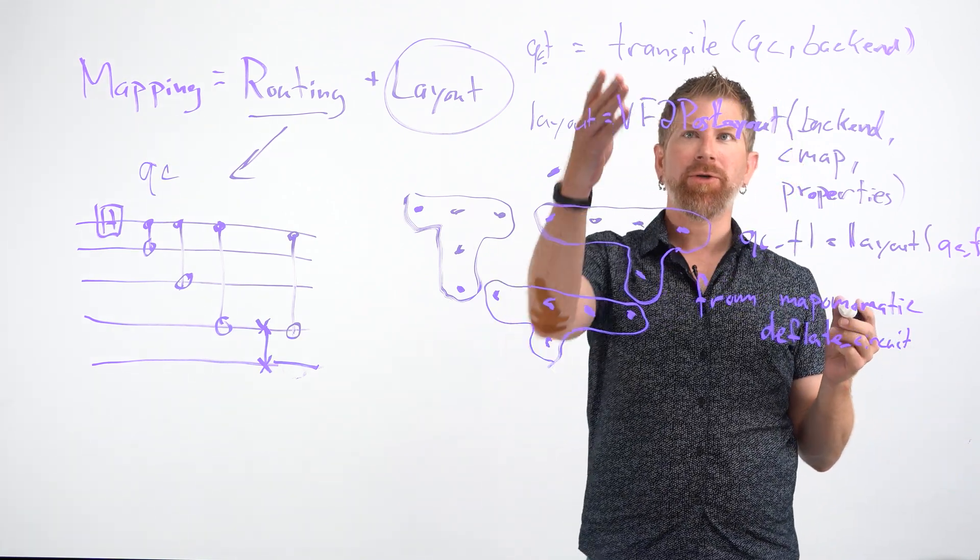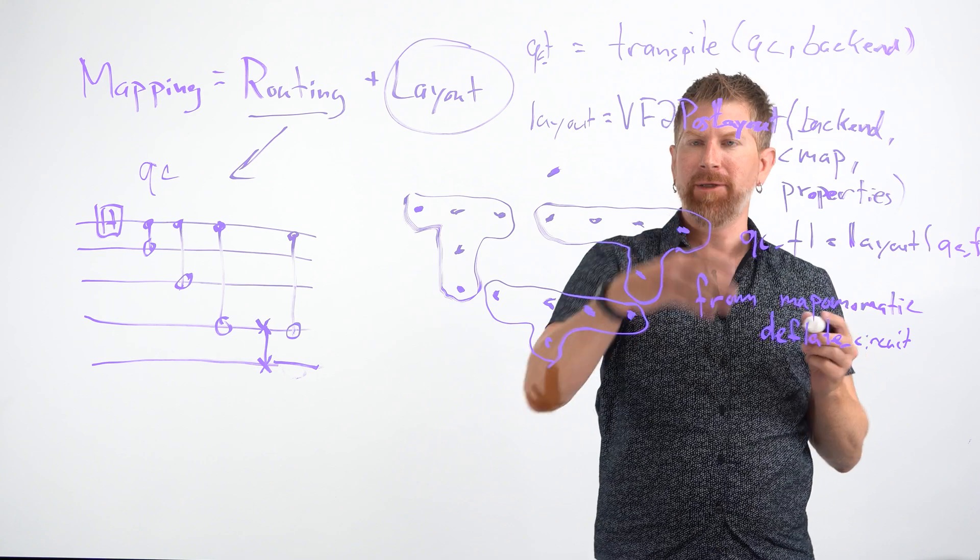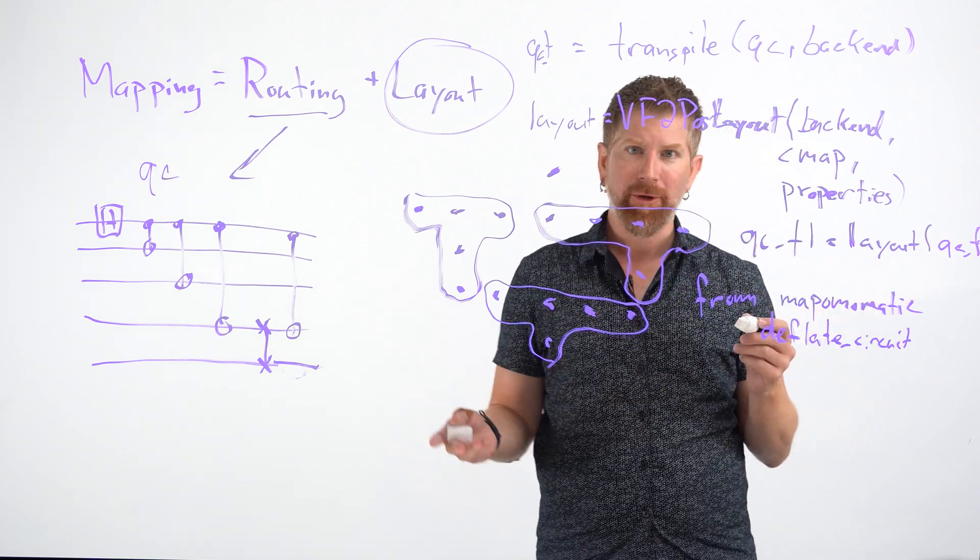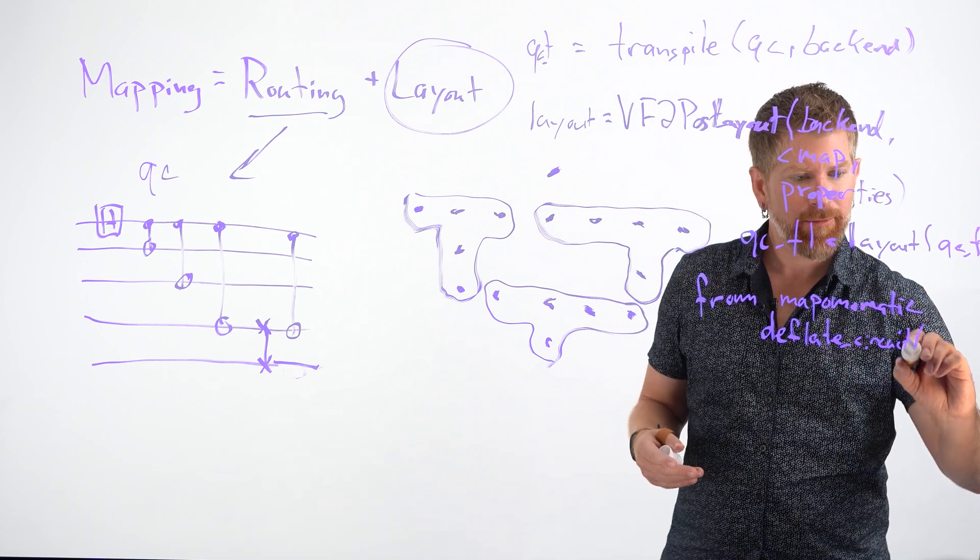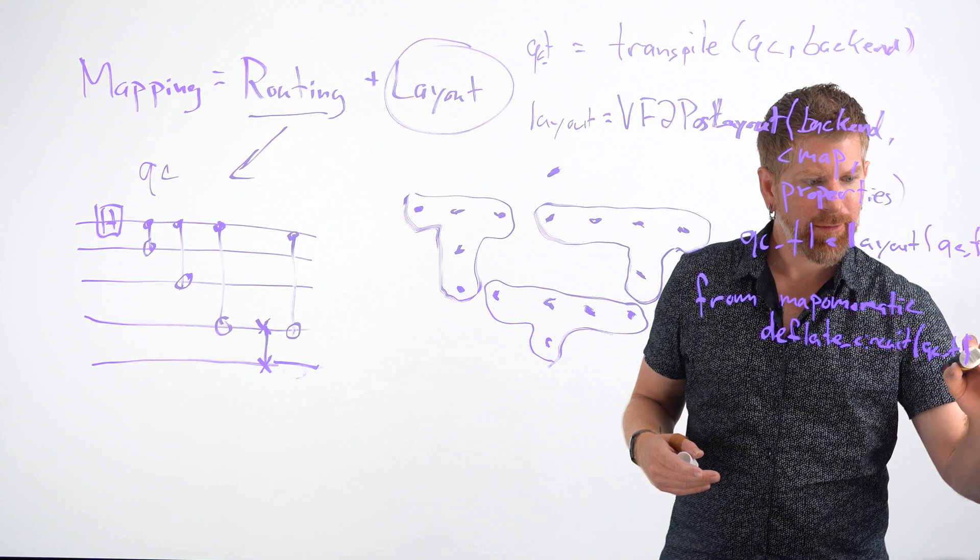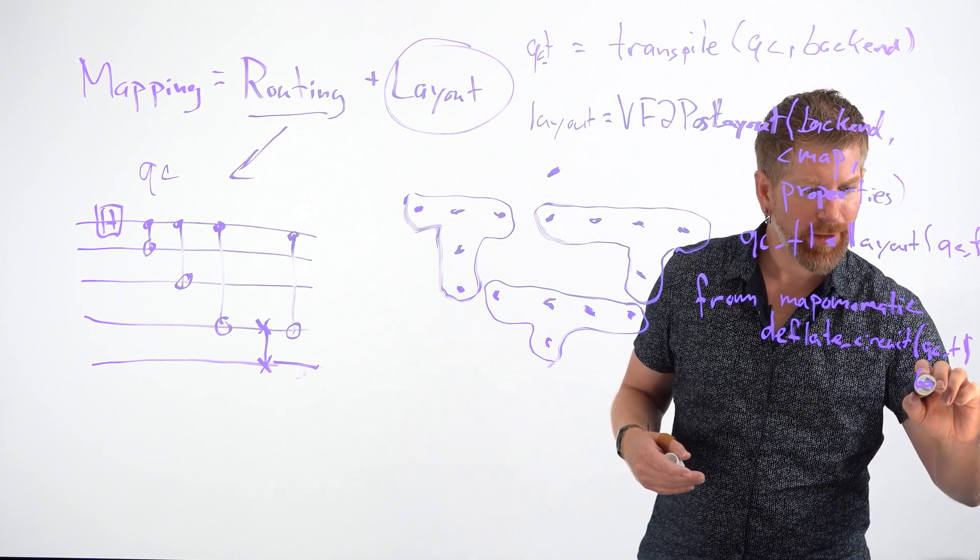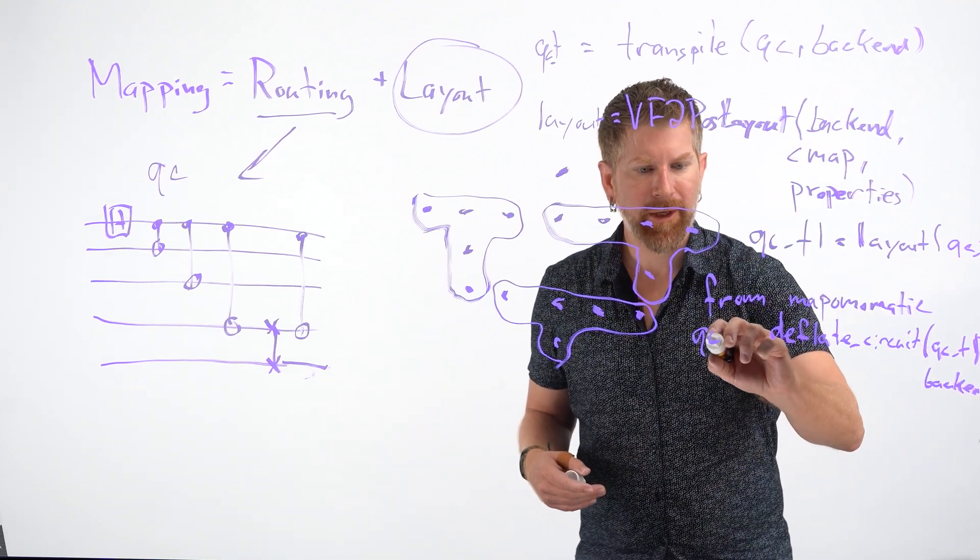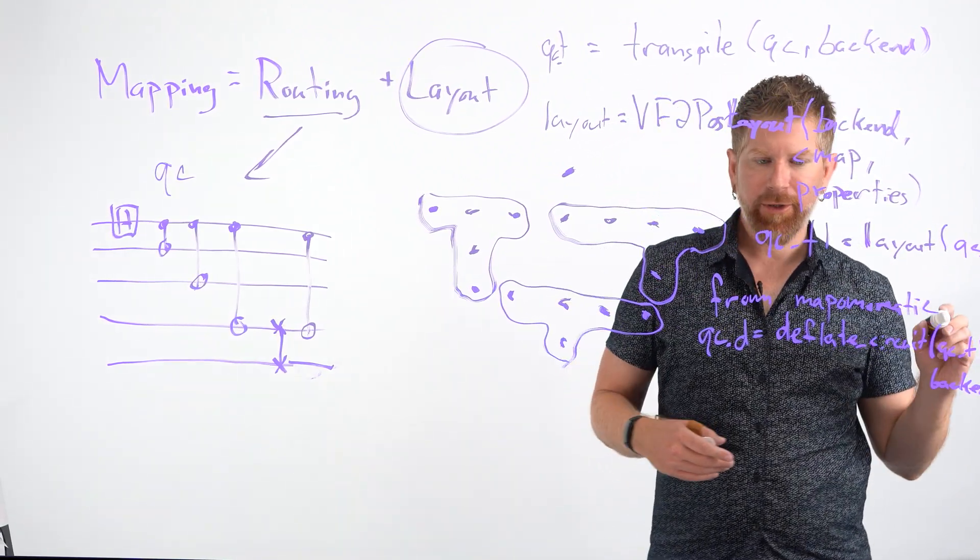What happens here is when you transpile the circuit to the backend, it's going to extend the circuit to all the qubits on that backend. We need to remove the qubits that we're not using. This also needs the backend. So we'll have our deflated circuit.